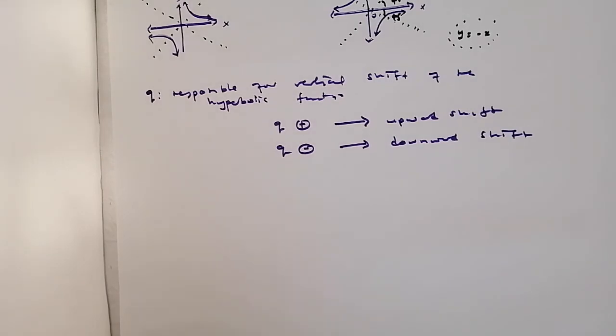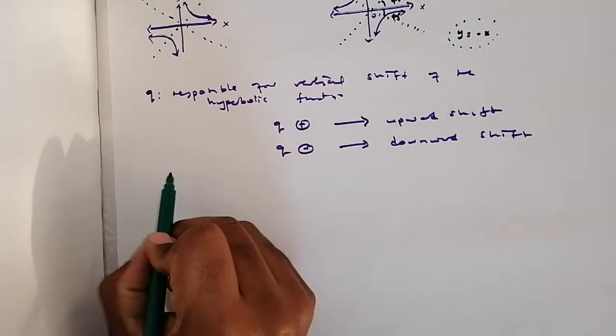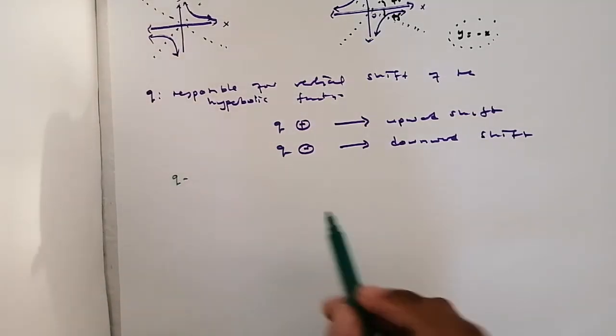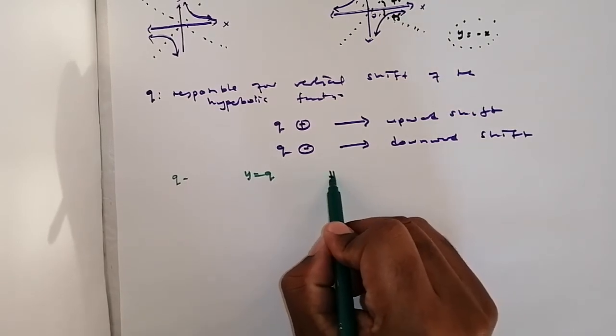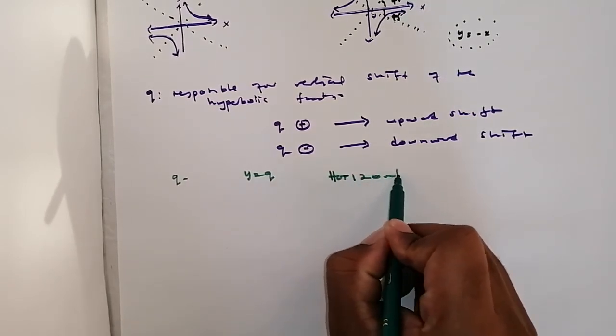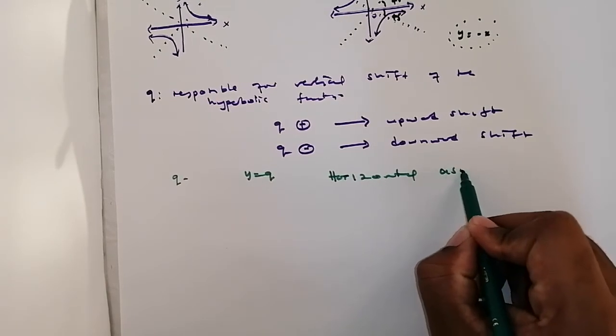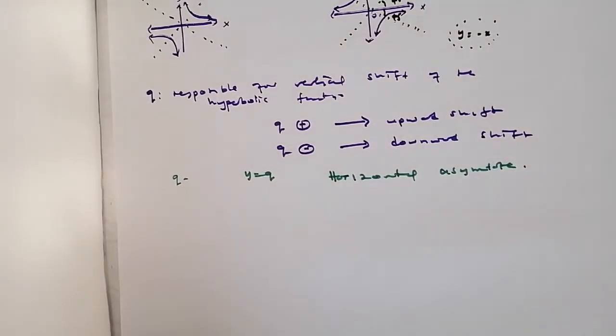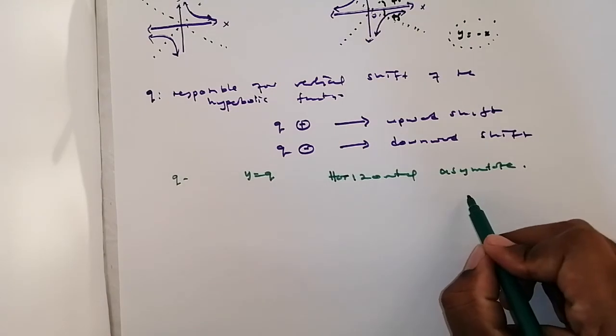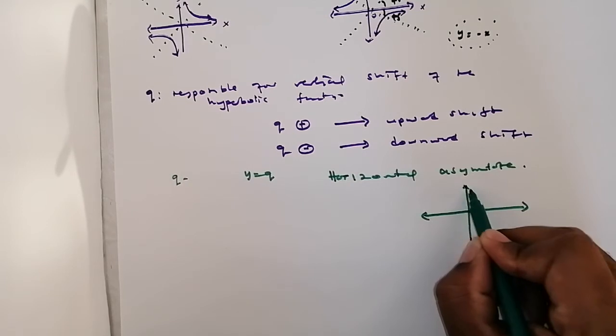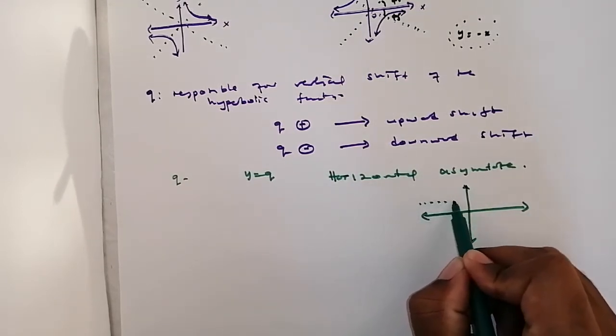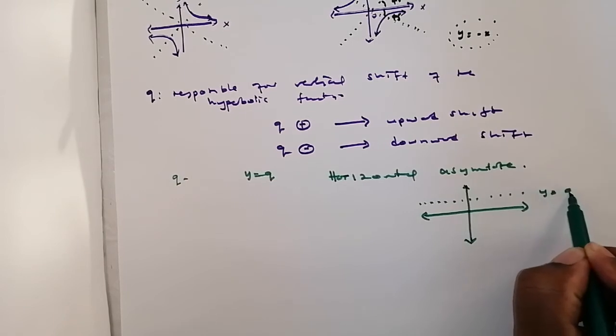Besides Q being responsible only for the vertical shift, there is something so much special that Q represents. Q is gonna be a line, y equals Q. So it's gonna be a horizontal asymptote. And you might be sitting there at home and be like, what in the world is a horizontal asymptote? Or what is an asymptote, actually?